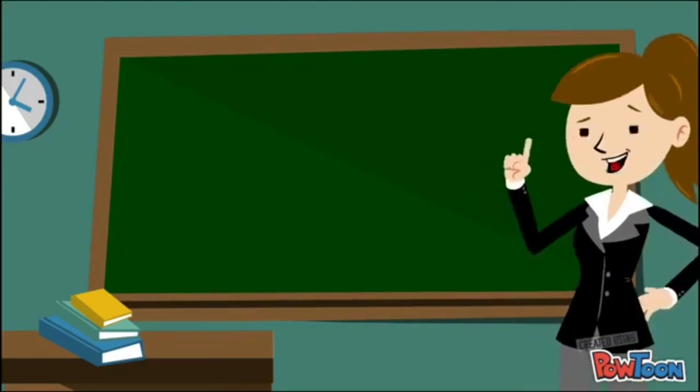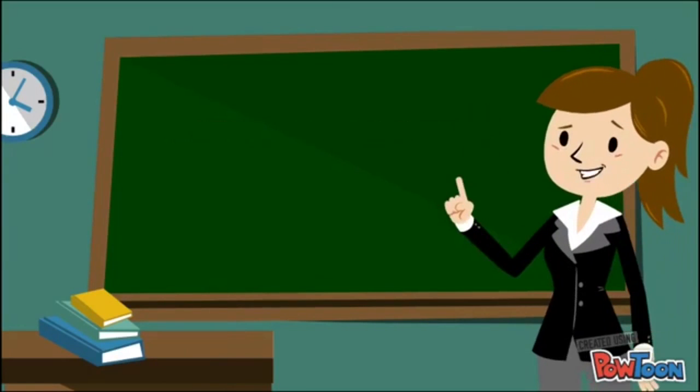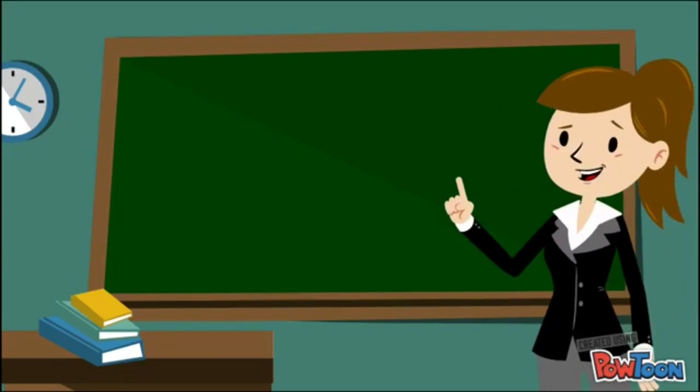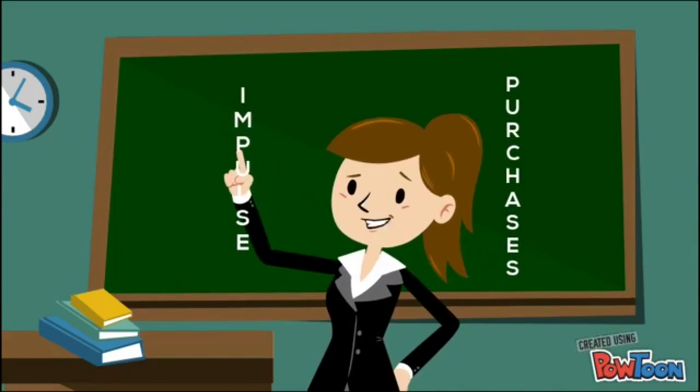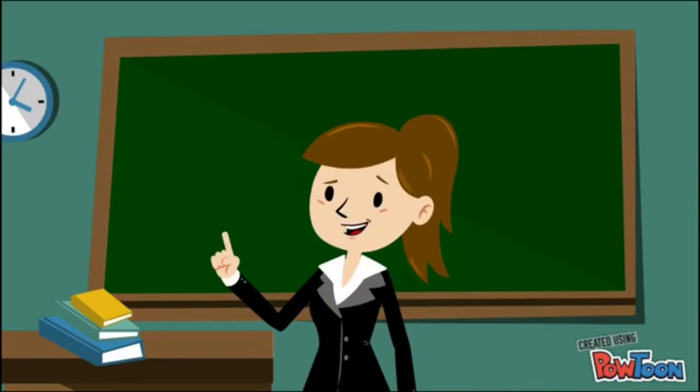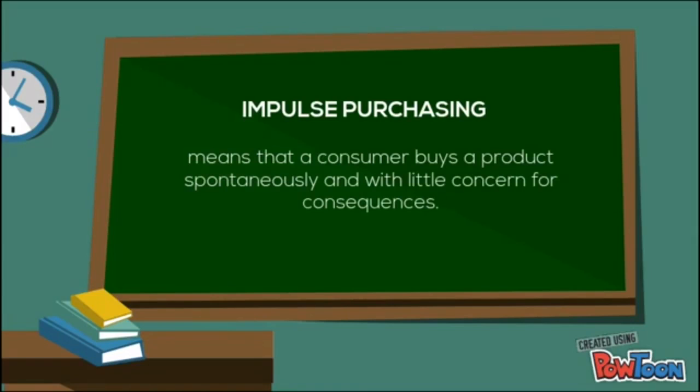Experiential hierarchy of effects is defined by an affect-behavior-cognition processing order. In this scenario, the consumer is influenced to purchase based entirely on their feeling regarding a particular product or service. Impulse purchases can be explained from the experiential perspective. These purchases are often motivated by feelings. Impulse purchasing means that a consumer buys a product spontaneously and with little concern for consequences.